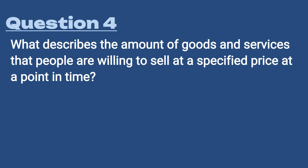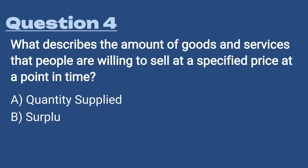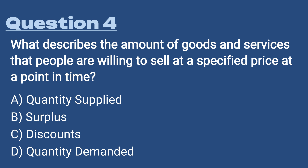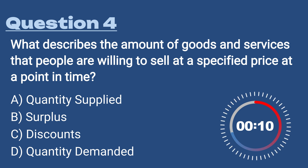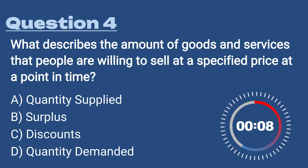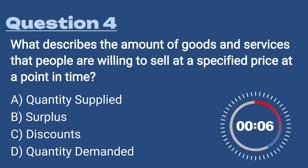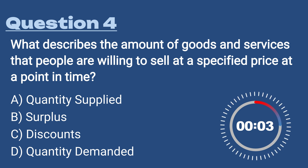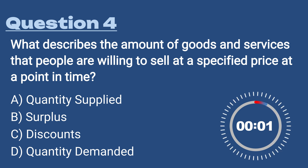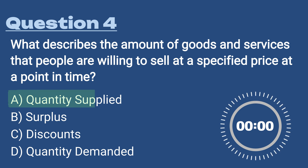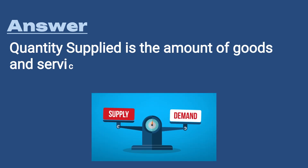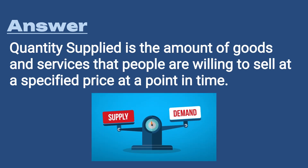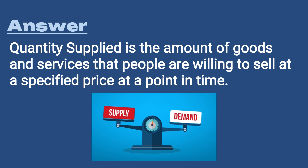Question number four: what describes the amount of goods and services that people are willing to sell at a specified price at a point in time? A) Quantity supplied, B) Surplus, C) Discounts, D) Quantity demanded. The answer is A, quantity supplied — the amount of goods and services that people are willing to sell at a specified price at a point in time. In other words, this is what suppliers are bringing to the marketplace.